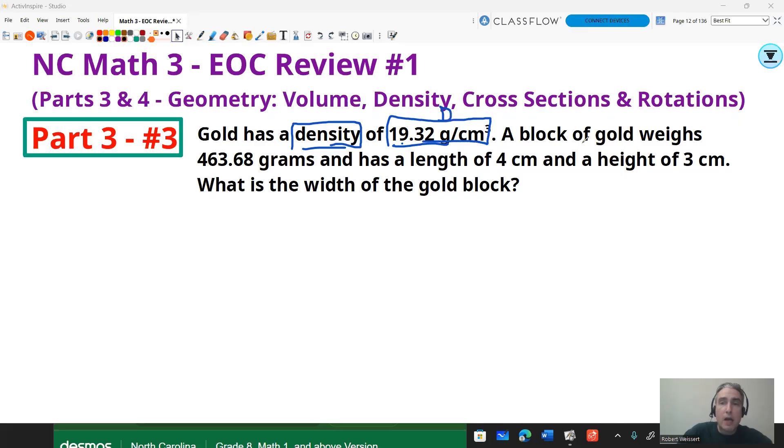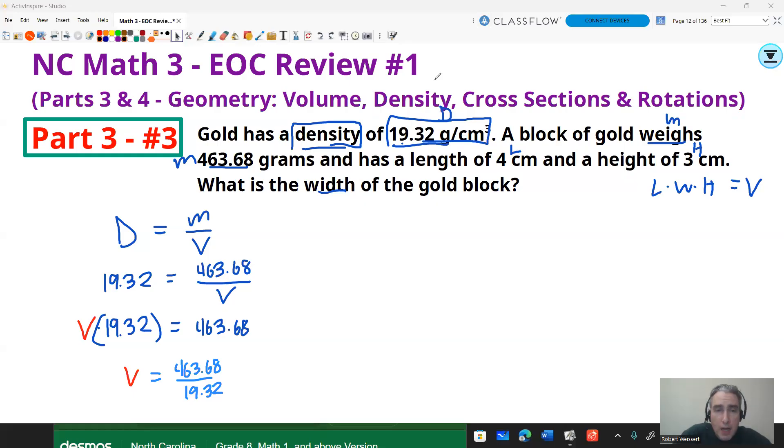So this is density, I'll call that capital D. This is the block weight, that'll be your mass: 463.68 grams. And it has a length of 4 and a height of 3, and we want to know the width. So length times width times height is your volume. This is just a rectangular prism. So the first thing we're going to do is use the density formula DMV: density is mass divided by volume. We're going to substitute in the things that we have. Since I have 19.32 and I have 463.68, I do not have the volume of this block, so I'm going to solve for the volume.